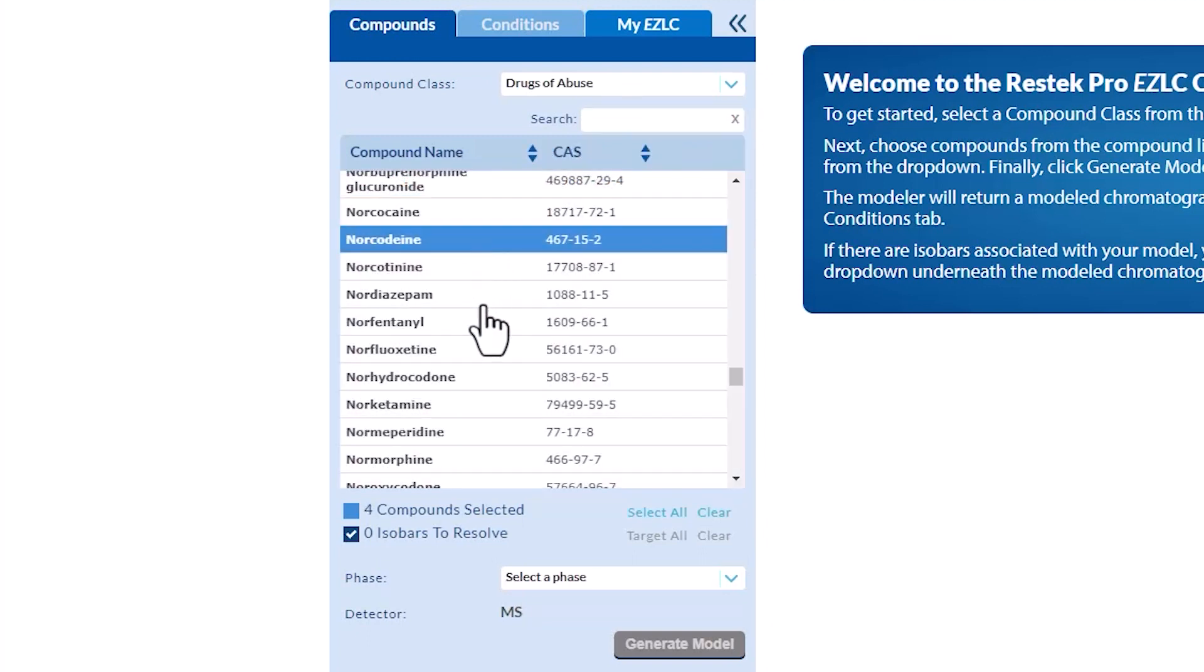As you add compounds, a blue box with a white checkmark may appear in the compound row beside the CAS number. This indicates the compound is an isobar of another compound you have selected.